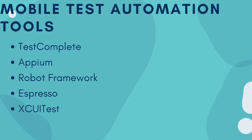For mobile test automation tools, you need to know TestComplete, APM, Robot Framework, Spirco, and XCUITest. These technologies are used when you are testing any mobile application.